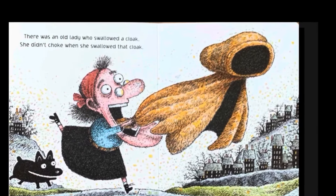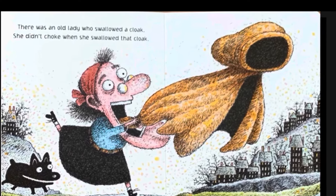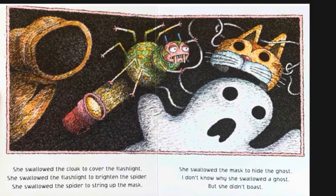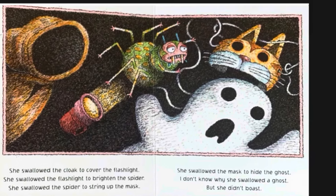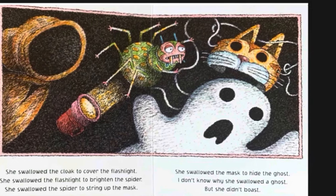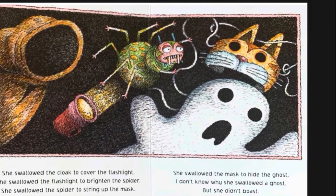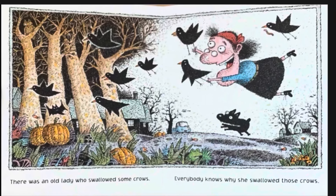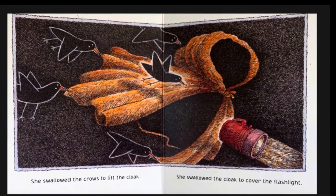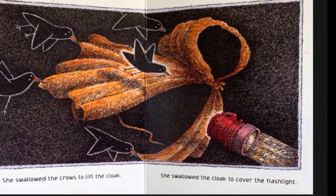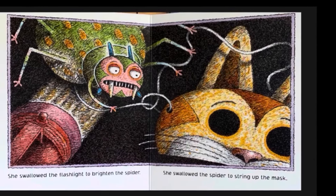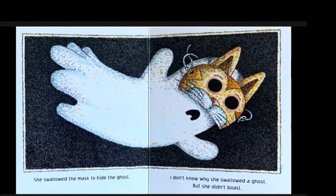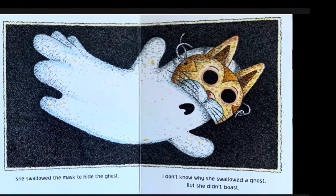There was an old lady who swallowed a cloak. There was an old lady who swallowed some crows. Everybody knows why she swallowed those crows. She swallowed the crows to lift the cloak. She swallowed the cloak to cover the flashlight. She swallowed the flashlight to brighten the spider. She swallowed the spider to string up the mask. She swallowed the mask to hide the ghost. I don't know why she swallowed a ghost, but she didn't boast.